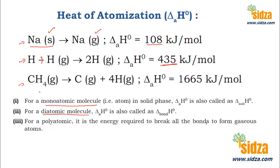For a polyatomic molecule like CH₄, there are 4 carbon-hydrogen bonds. To convert 1 mole of CH₄ into carbon and hydrogen, you need 1665 kilojoules. This is the energy required to break all 4 bonds in CH₄. From this value, you can find the bond dissociation energy: since there are 4 carbon-hydrogen bonds, dividing 1665 by 4 gives you the average bond dissociation energy of a carbon-hydrogen bond in methane.